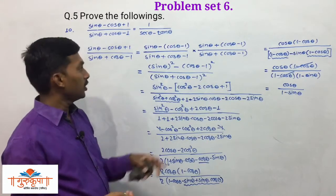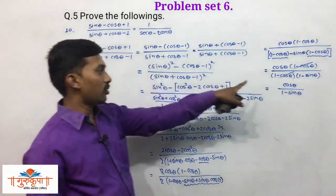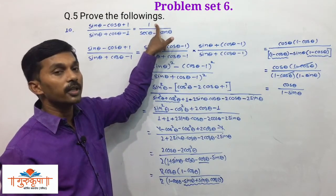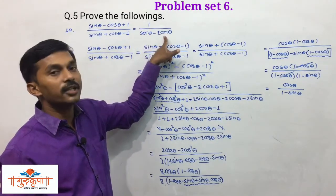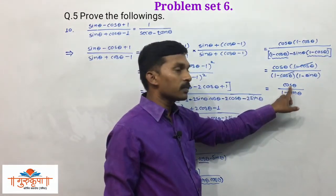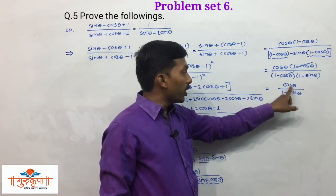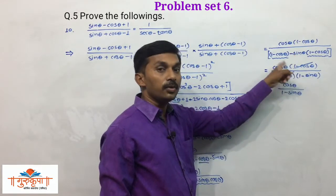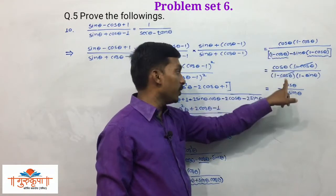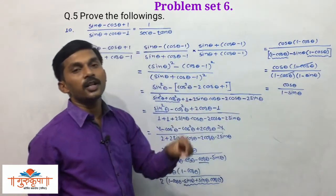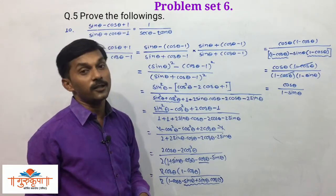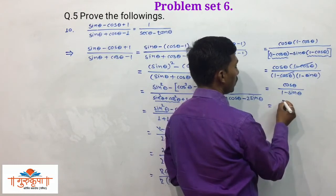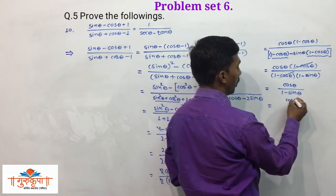We get the simplest form of the LHS: cosθ/(1 - sinθ). But the RHS needs 1 in the numerator and (secθ - tanθ) in the denominator. So how do we get 1 there? We divide this cosθ by cosθ. Dividing the numerator by cosθ gives 1, and we must divide the denominator by cosθ as well.